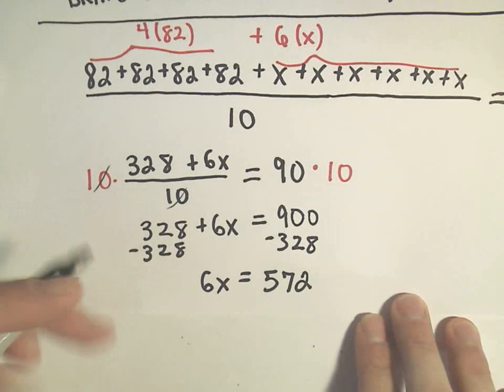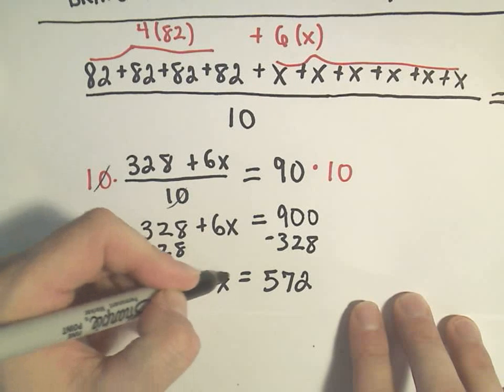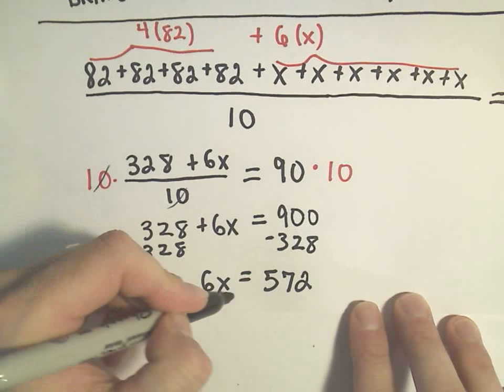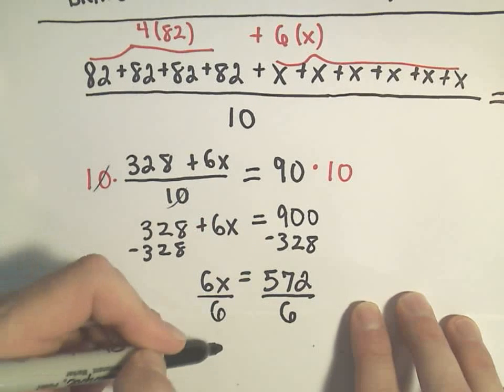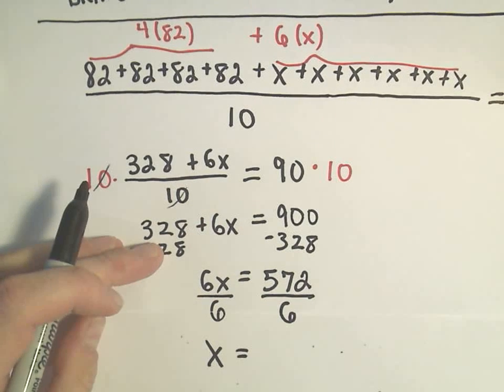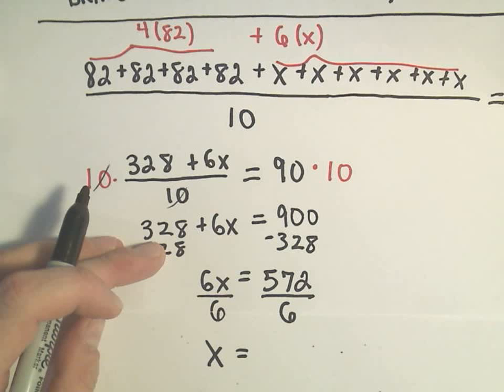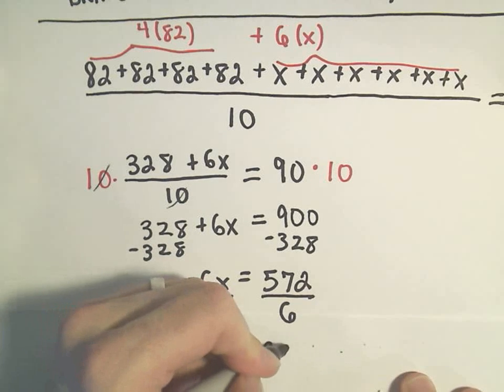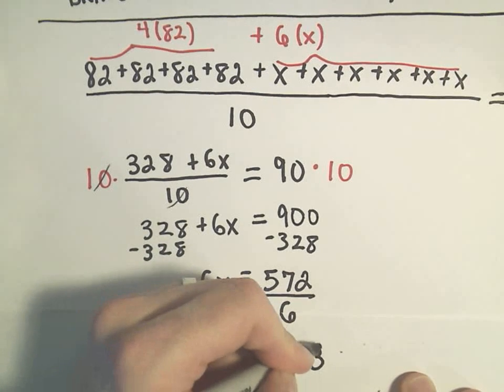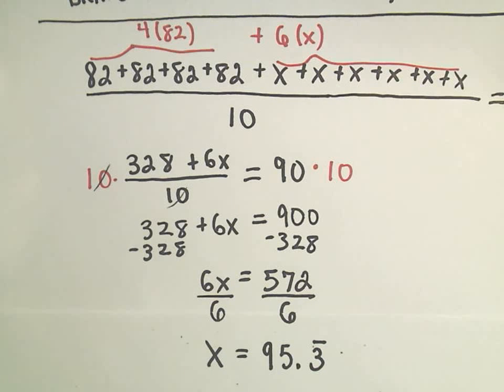So the last thing we need to do is just get x, and again, x just represents the average score we're going to have to make. So if we simply divide by six, divide by six, we'll be left with x on the left side, and I'm going to take the calculator shortcut here. 572 divided by six gives you 95.3 repeating. So it says you're going to have to make, on average, a little bit over 95% on your remaining six quizzes to bring your average up to 90% overall.